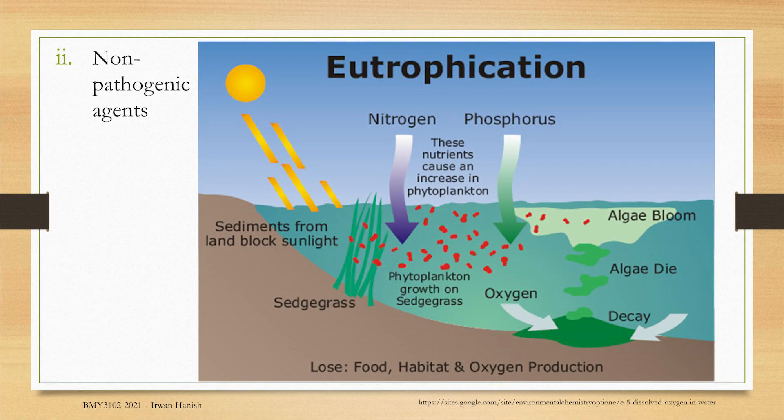Eutrophication happens when you have too much of a good thing. Nutrients like nitrogen and phosphorus help microorganisms to grow in aquatic ecosystems. But when you have too much nitrogen and phosphorus, you get excess growth of algae and cyanobacteria. You'll get algal bloom — an enormous layer of algae spreading out on the surface of the water — which blocks out sunlight and kills photosynthetic organisms at the bottom.